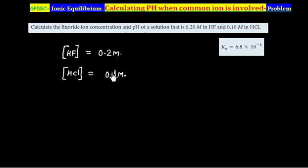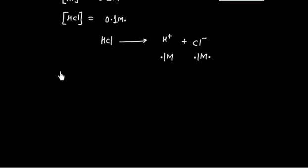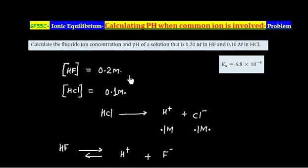HCl is a strong acid and it will dissociate 100%, giving H⁺ plus Cl⁻. Since it is initially 0.1 M in HCl, we will have 0.1 M H⁺ and 0.1 M Cl⁻. Now HF is a weak acid and it will dissociate into H⁺ plus F⁻.